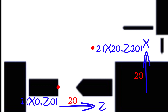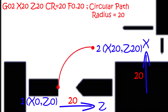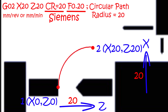According to the third method, we will program a block: G02, X20, Z20, CR equals to 20, F0.20, semicolon. With this block, the controller will give a command to move the tool in a circular path to coordinate position 20,20 with radius 20 in clockwise direction, with the feed defined by the programmer in the same block. This block represents Siemens controller programming as we are using CR for the radius. Feed units can be mm per revolution or mm per minute depending upon the code given in the program headers — G95 for mm per revolution and G94 for mm per minute in the case of Siemens controller.